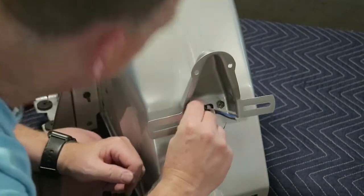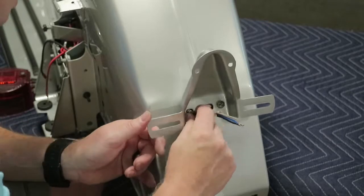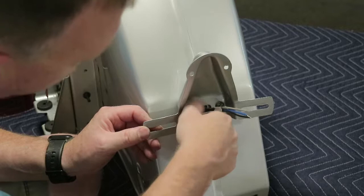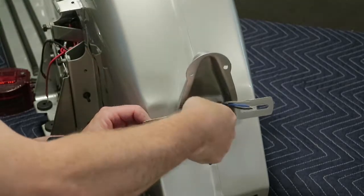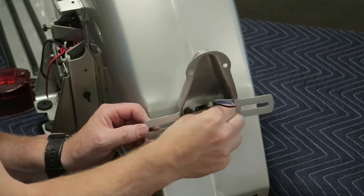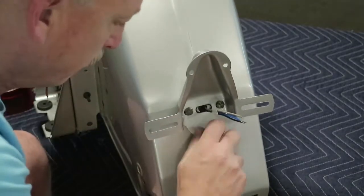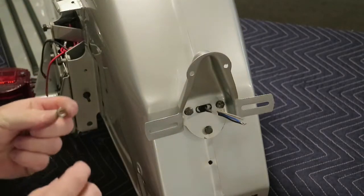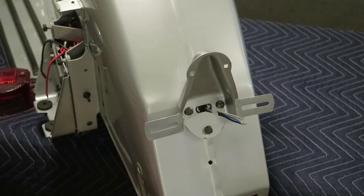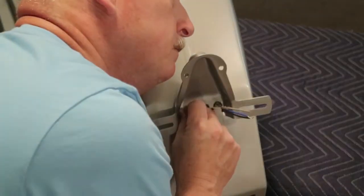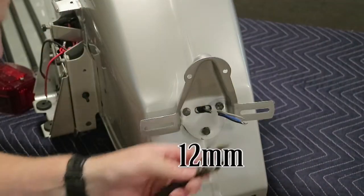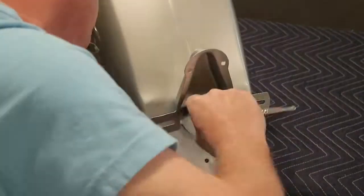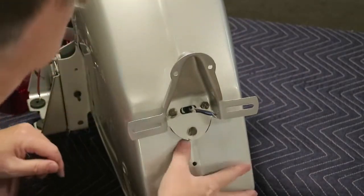I don't know if somebody modified this at one time or what, but these have nylocks nuts on them. When you got nylocks nuts, you really don't need a lock washer on these, but somebody put lock washers on these things somewhere along the way. My guess is this is probably like a 10 millimeter. I'm using a number 12 socket and a crescent wrench. Okay, there's the frame. It's on.